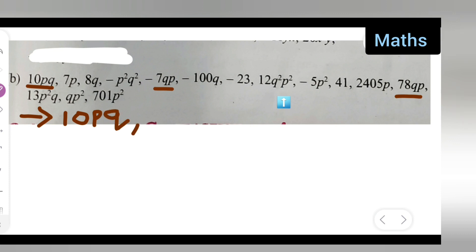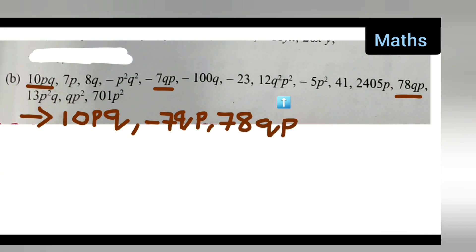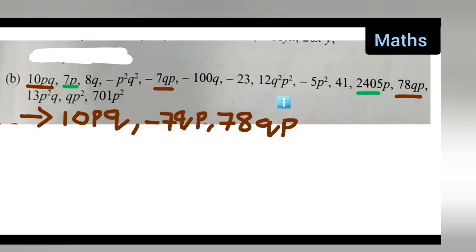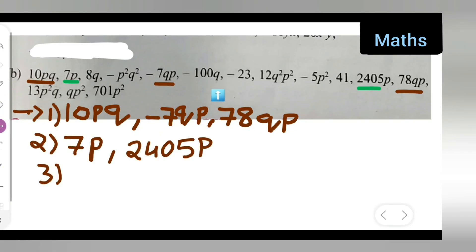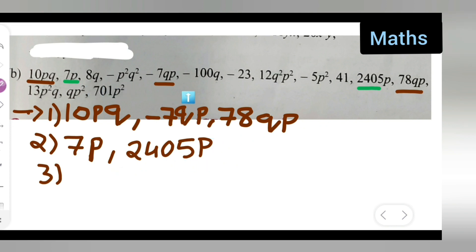Next, let us see 7p — then 2405p. Okay, two terms. So write down: 7p and 2405p. Next, let us do 8q and minus 100q. The third group is: 8q, comma, minus 100q.